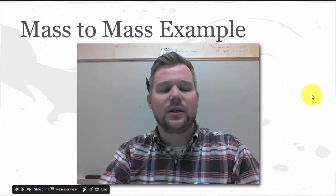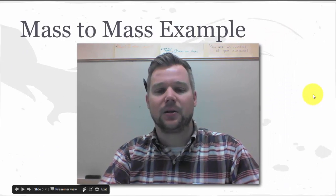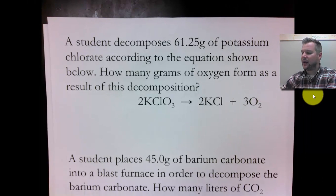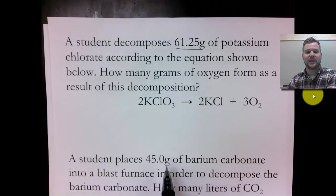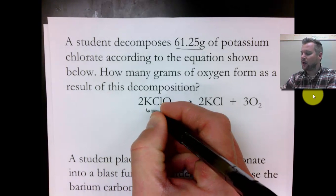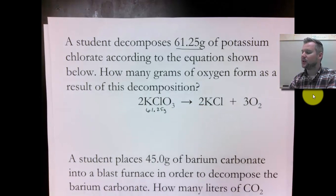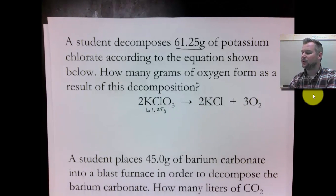Here is an example problem of a mass-to-mass problem. When we do these problems, we want to ID what we know. This one tells us 61.5 grams of potassium chlorate. One of the things I'd like you to do when you're doing these problems is to write down what we know underneath the appropriate substance in the chemical equation. That tells me that you can correctly ID which formula you're supposed to use.